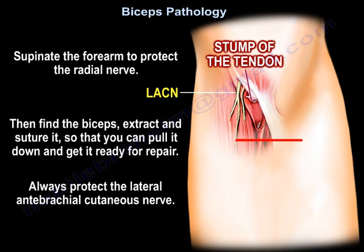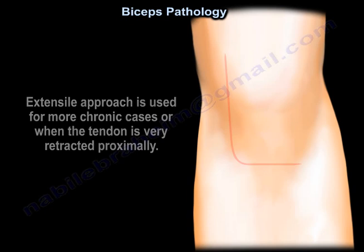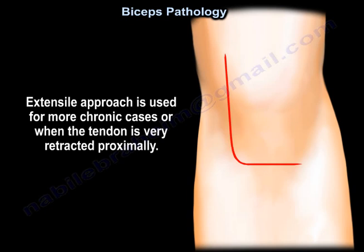Find the biceps tendon, extract it, and suture it so you can pull it down and get it ready for repair. Always protect the lateral antebrachial cutaneous nerve. An extensile approach is used for more chronic cases or when the tendon is very retracted proximally.